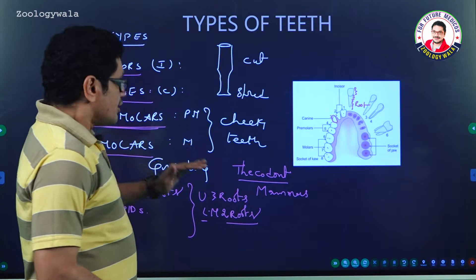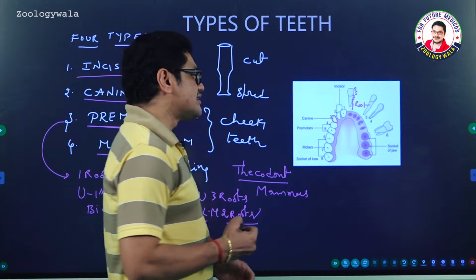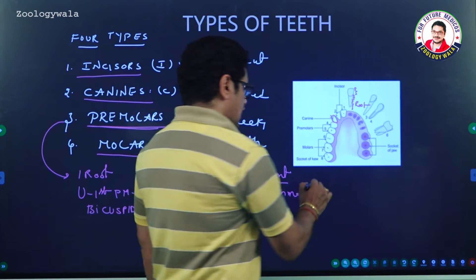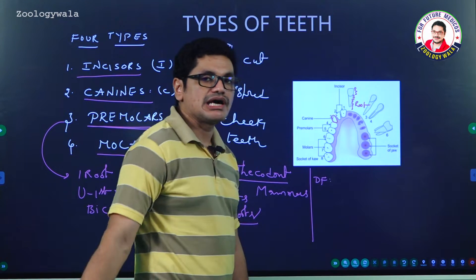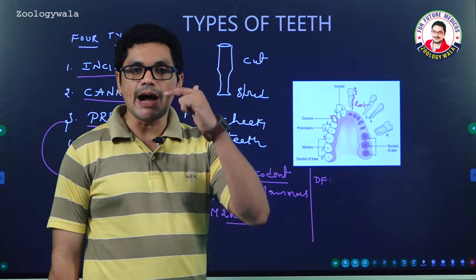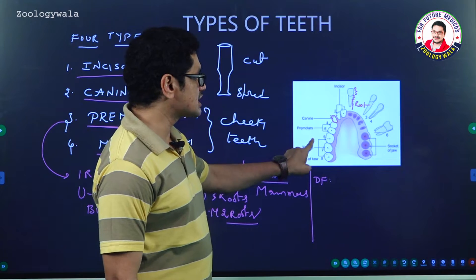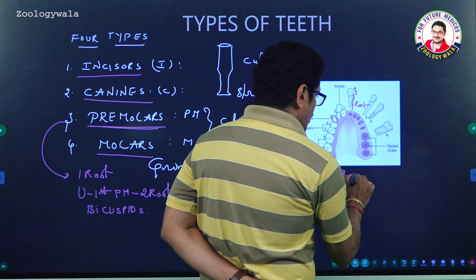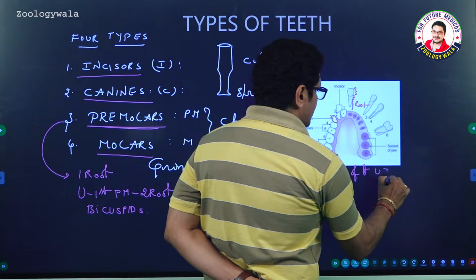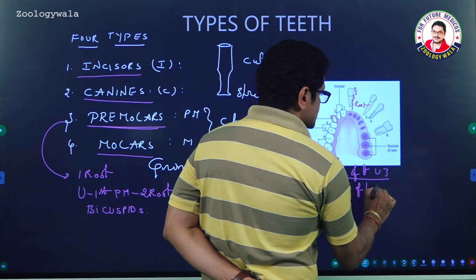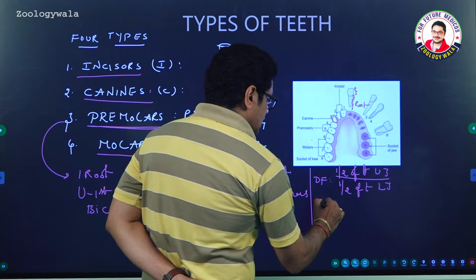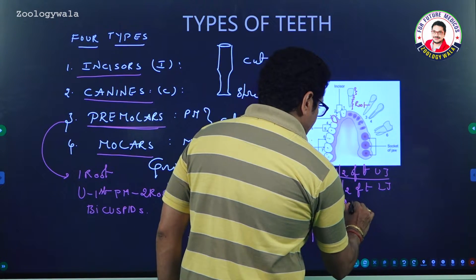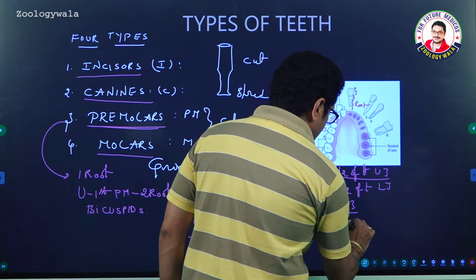Now, how many teeth are present in an adult? Teeth are represented with a dental formula. The dental formula is: half of the teeth present in the upper jaw divided by half of the teeth present in the lower jaw. The typical dental formula of an adult human being is 2-1-2-3 / 2-1-2-3, representing incisors, canines, premolars, and molars.